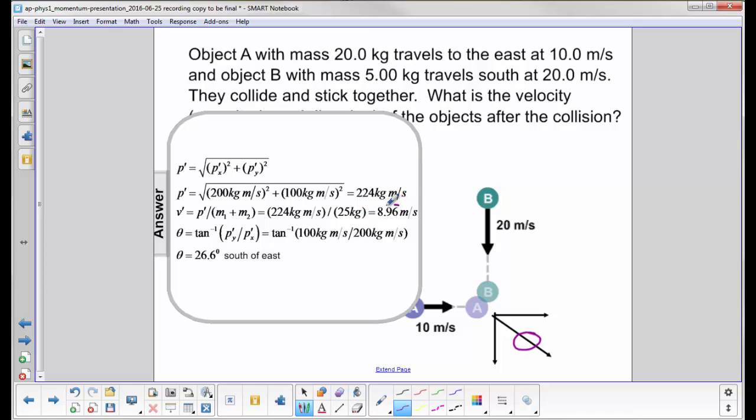To find the angle, I take the arc tan of P prime Y over P prime X. So that would be 100 over 200. And I get an angle of 26.6 degrees south of east, which nicely matches the vector picture that we drew.